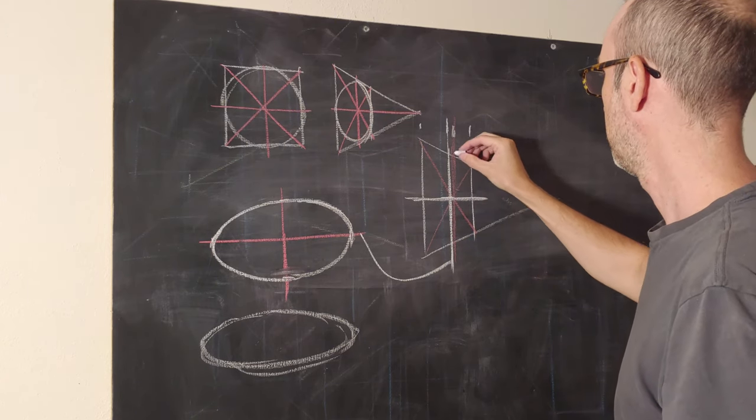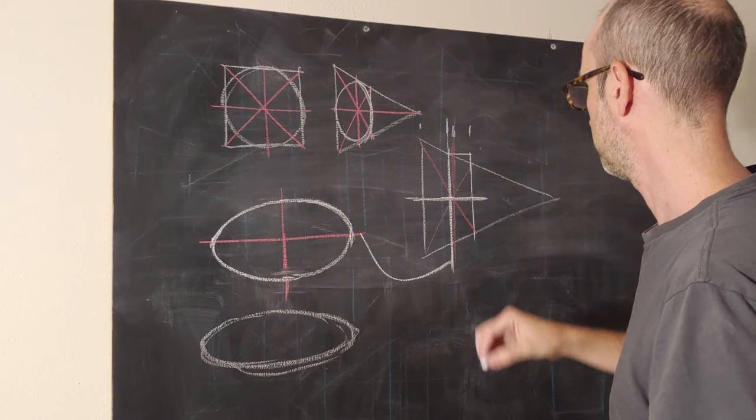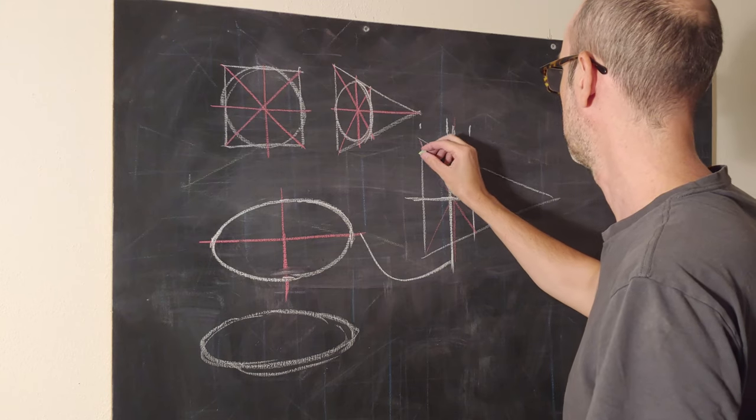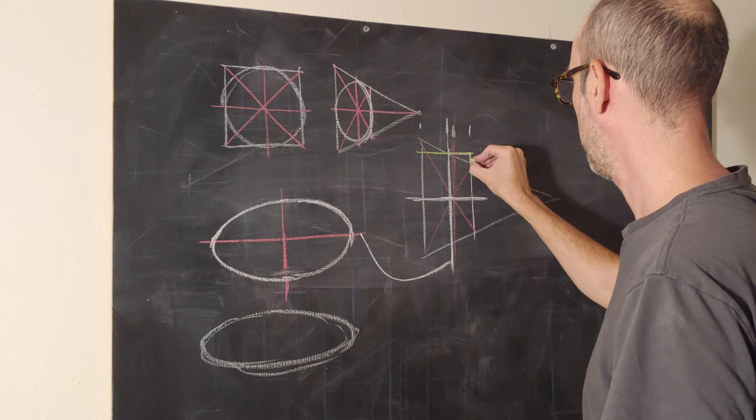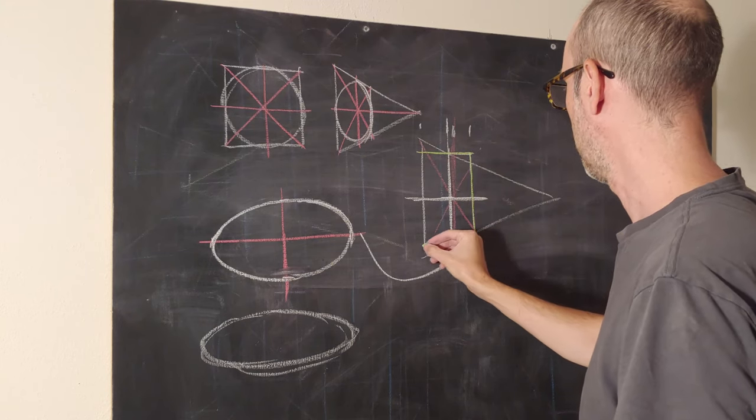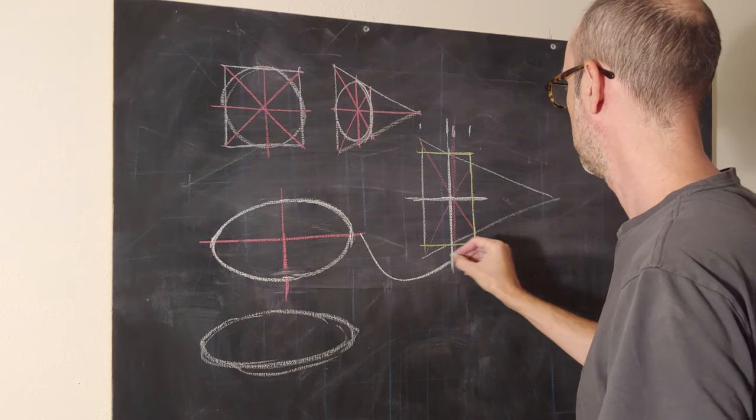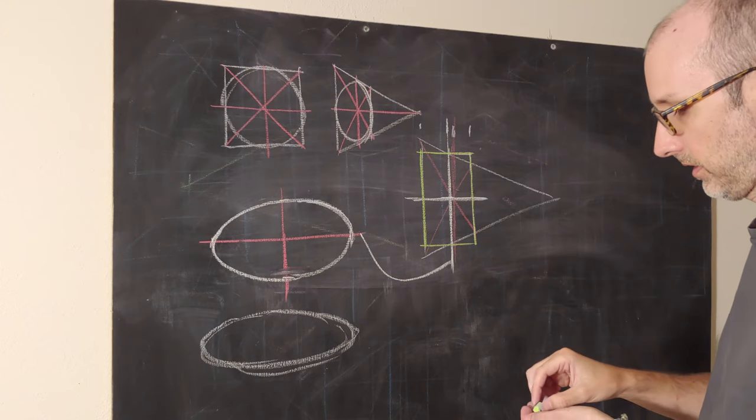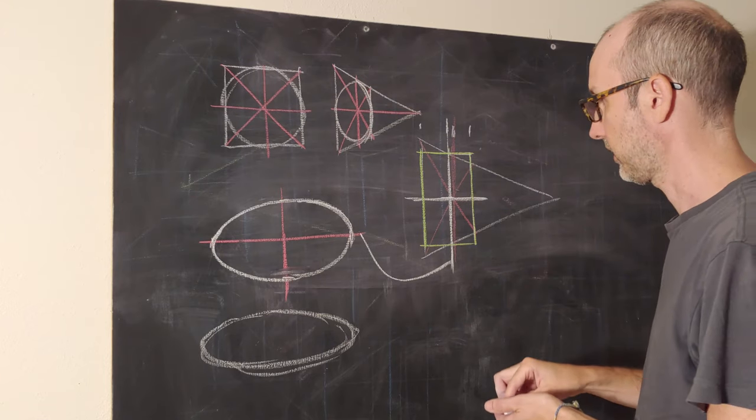And then our binding box is right here. I'll color code the binding box so it's different. So our actual binding box, mathematical binding box, is right here. You'll notice that it shares some commonalities with the perspective, but breaks it in other cases.